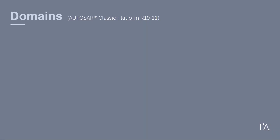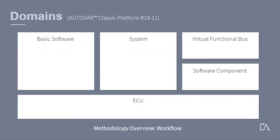The AUTOSAR methodology is structured into five domains of development. The abstract system abstracts from the concrete software architecture. The virtual functional bus is an abstract communication mechanism that allows software components to interact. The other two domains are the basic software and the ECU. These domains are depicted in the methodology overview workflow, which includes the design steps to build an AUTOSAR system.